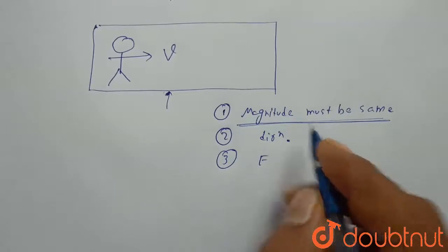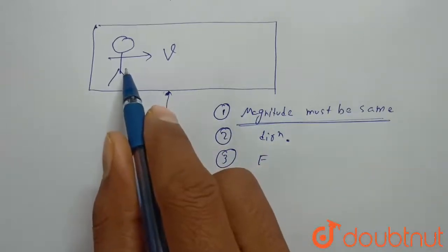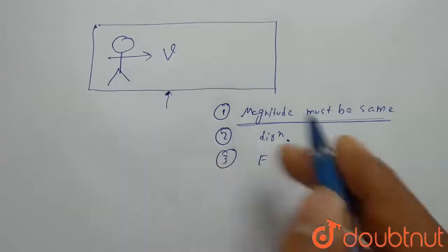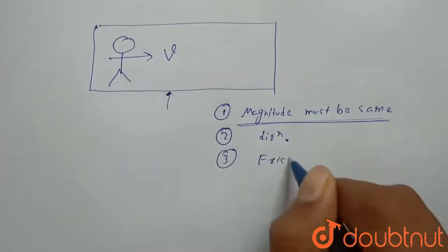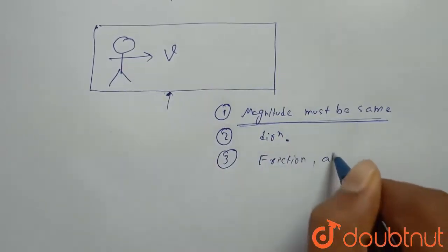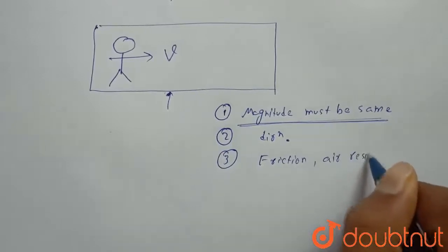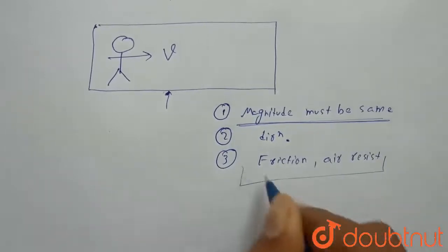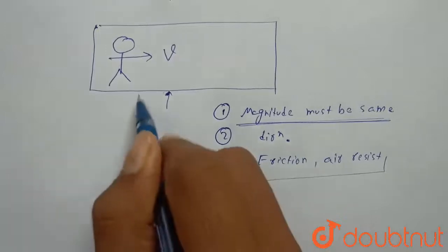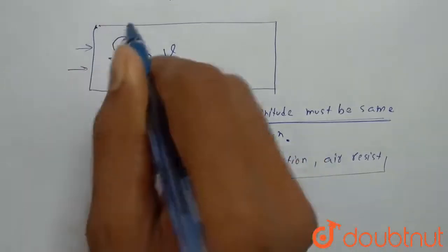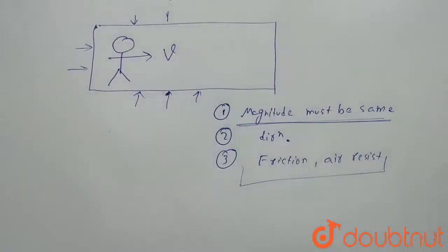If no external force is applied then it will keep on moving with the same velocity, such as friction and air resistance. If friction and air resistance are absent or any external forces are absent, then this object can move easily with same velocity. Thank you.